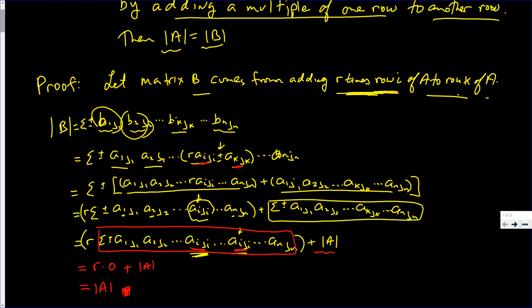All I did was distribute that addition — this times this times this all the way times that, plus this again times this again times this, eventually A_{n,jn}. I argued that one summation is a determinant where two rows are exactly the same, so that determinant is zero. r times zero is zero, so I ended up with the determinant of A.